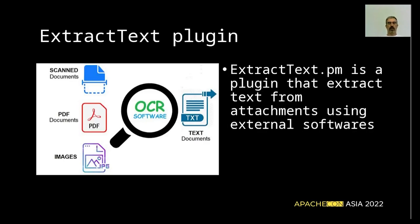The ExtractText plugin is another great addition. It is a plugin that uses OCR software to extract text from attachments. This is a common technique used by spammers — they often send an email with only garbage in the text body but attach an image or a PDF containing the actual spam content, sometimes including a bad URL inside a PDF. All this text can be analyzed by external OCR software, extracted, and then injected into the SpamAssassin engine, so even if the spammy text is in an attachment it can now be detected.